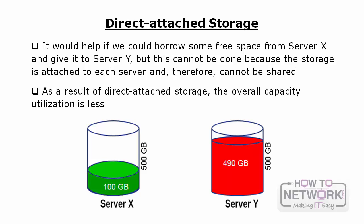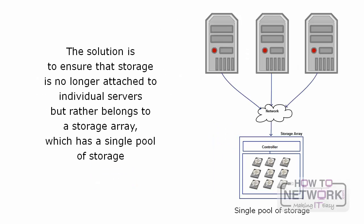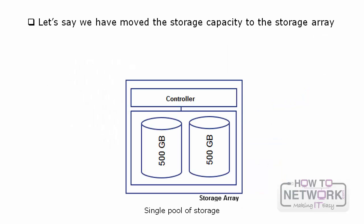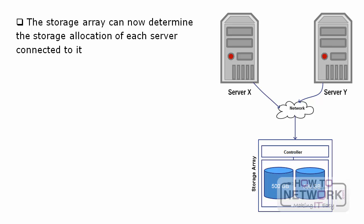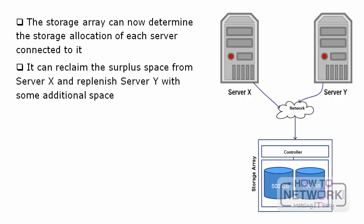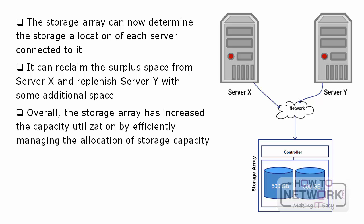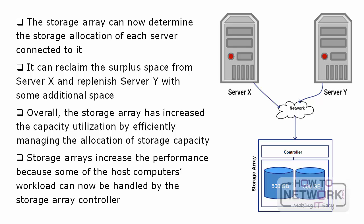As a result of Direct Attached Storage, overall capacity utilization is low. The solution is to move storage to a storage array with a single pool. In our example, the storage array now has a total capacity of 1000 GB, and both Server X and Server Y access their storage from it. The array can reclaim surplus space from Server X and replenish Server Y with additional space, increasing overall capacity utilization. Storage arrays also increase performance because some host computer workload can now be handled by the storage array controller.